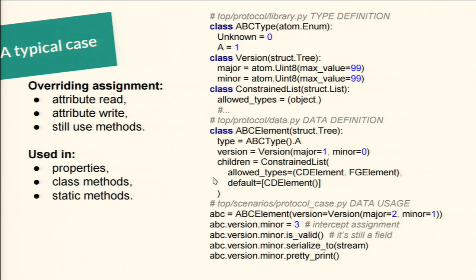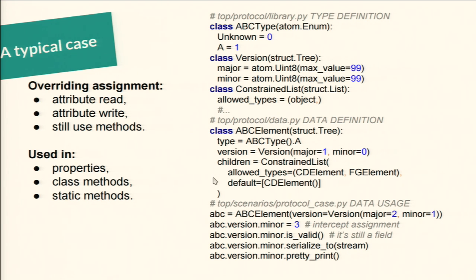Most importantly, you get this kind of use: you have an ABC element with a version that has a minor field. When you want to change this minor field, you don't have to call it, so it doesn't look strange. But when you assign to it, you can still validate it and serialize it. This way you move all the logic down with the structure — you only care about what this particular field does in respect to serializing, and the field above calls this field to get the serialized data and constructs the bigger parts.